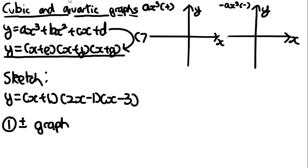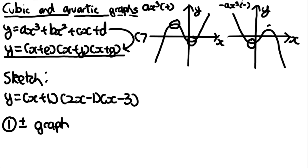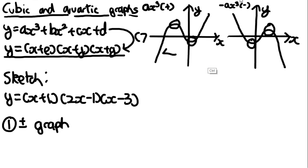A positive cubic has a distinctive shape going from bottom-left to top-right, and a negative cubic is the reflection of that. The key difference from a quadratic is that a cubic has two turning points where a quadratic has one, and the two tails end up on opposite sides of the x-axis. This is because cubing a negative number gives a negative output, whereas squaring it gives a positive — so quadratic tails stay on the same side.